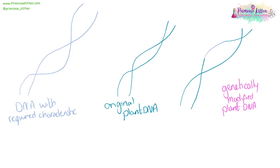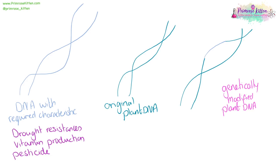We can genetically modify plant DNA — we can take a gene with a required characteristic, whether that is a drought resistance gene so that countries that don't get much rain can survive better, or a gene which produces a vitamin so that countries with poor food security where people are dying from vitamin deficiency can engineer the rice they're growing to be healthier so that fewer people die. Or whether it's pesticide resistance or the ability to resist being eaten by bugs so that yields are higher. We can take that gene and put it into our original plant DNA, producing a genetically modified plant, then produce seeds for farmers to grow with this new desired characteristic.